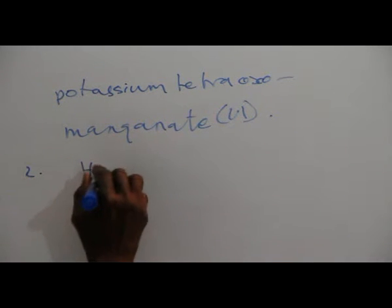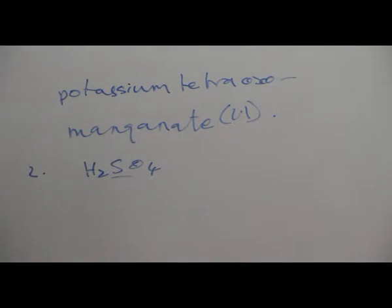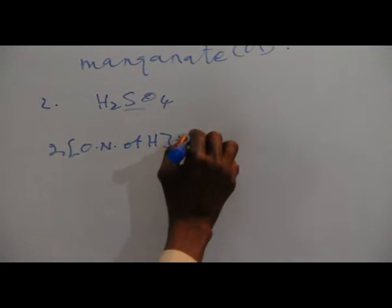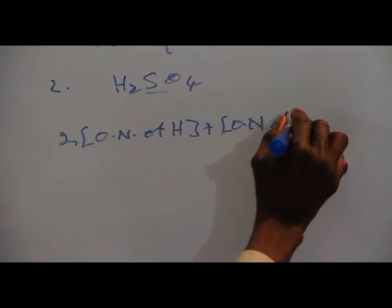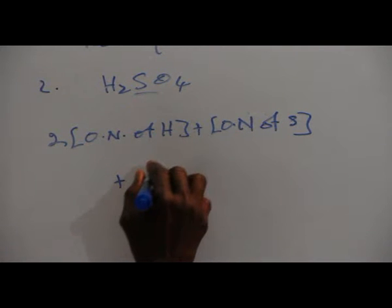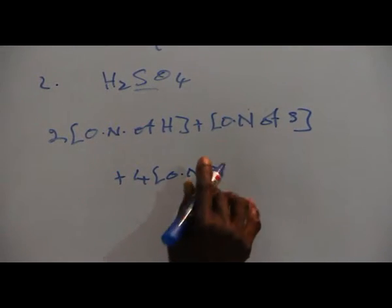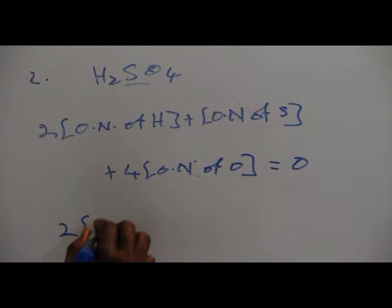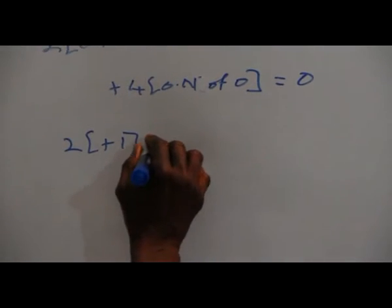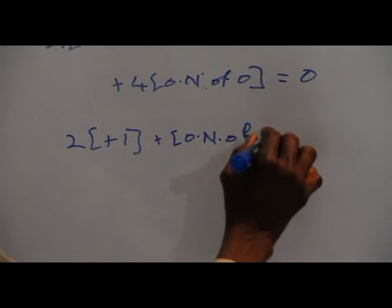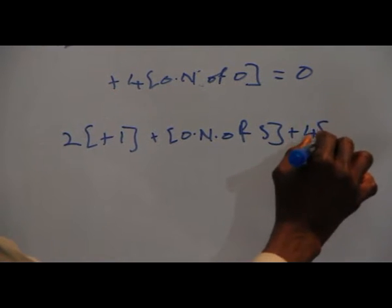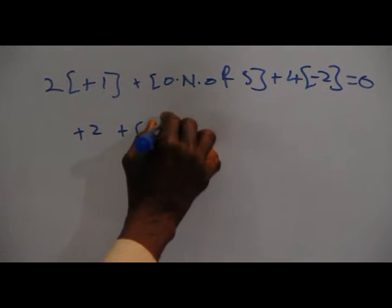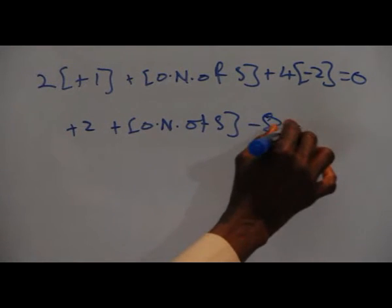Number 2: twice the oxidation number of hydrogen plus oxidation number of sulfur plus four times the oxidation number of oxygen is equal to 0. So twice plus 1 — the oxidation number of hydrogen is 1 — plus the oxidation number of sulfur plus 4 into minus 2. The oxidation number of oxygen is minus 2. So plus 2 plus the oxidation number of sulfur minus 8 is equal to 0.